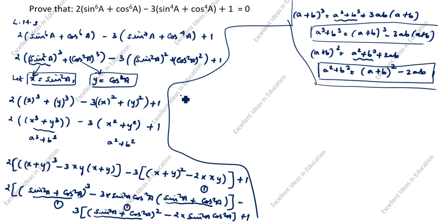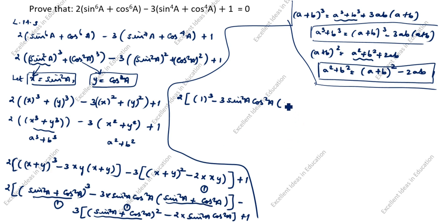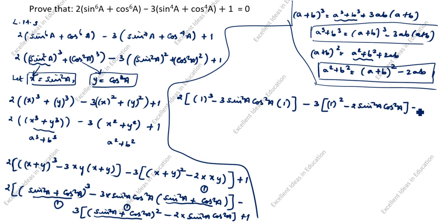Next step: 2[(1)³ − 3 sin²a cos²a · 1] − 3[(1)² − 2 sin²a cos²a] + 1. Since sin²a + cos²a = 1 and its square is also 1, we substitute accordingly. This gives 2[1 − 3 sin²a cos²a] − 3[1 − 2 sin²a cos²a] + 1.